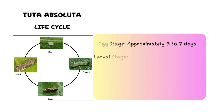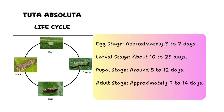Knowing the duration of each life stage is very important because it enables farmers to anticipate population peaks and implement timely interventions. The egg stage lasts approximately three to seven days, the larval stage about 10 to 25 days, the pupal stage around five to 12 days, and the adult stage approximately seven to 14 days. A female adult will lay approximately 260 eggs in its lifetime.